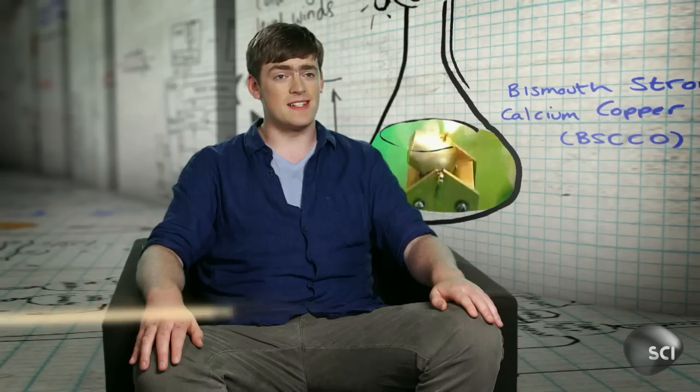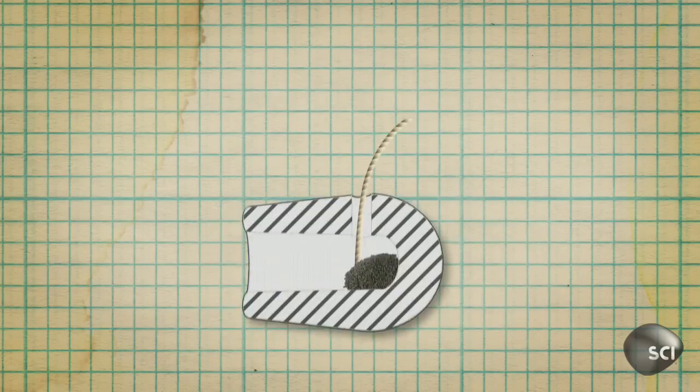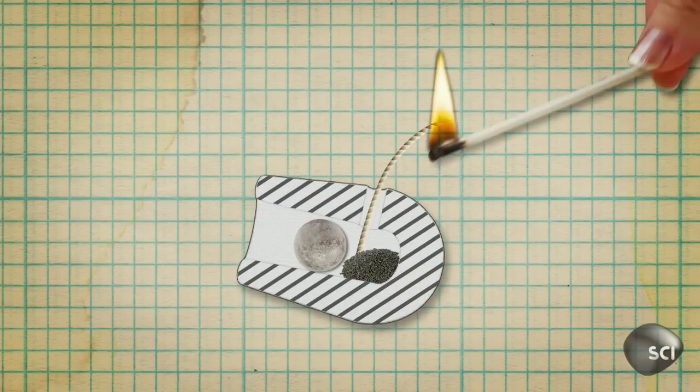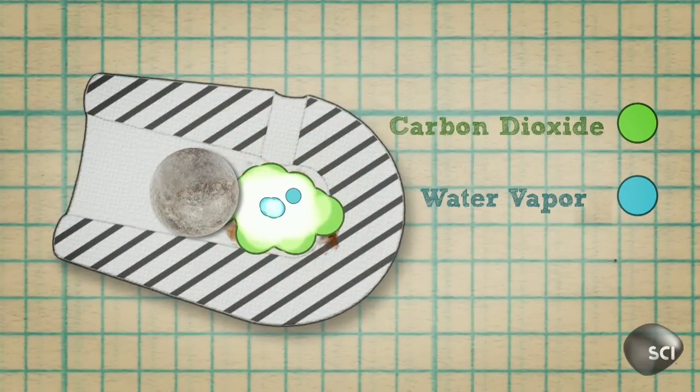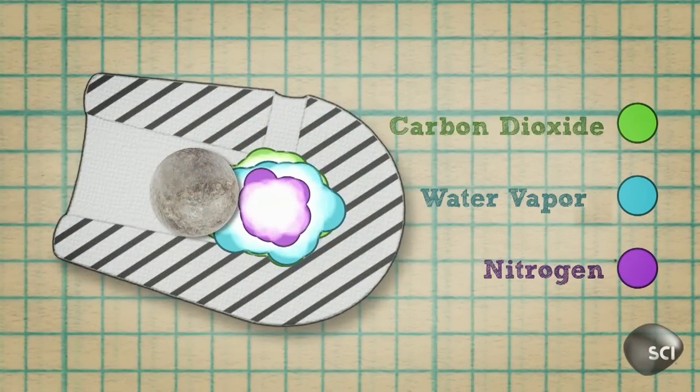This cannon works on exactly the same principle that all large cannons work on, which is that you have a cannonball and you have gunpowder. When gunpowder burns, it produces a lot of gases, and all of these gases are trapped behind the cannonball and want to expand. And expand they do.